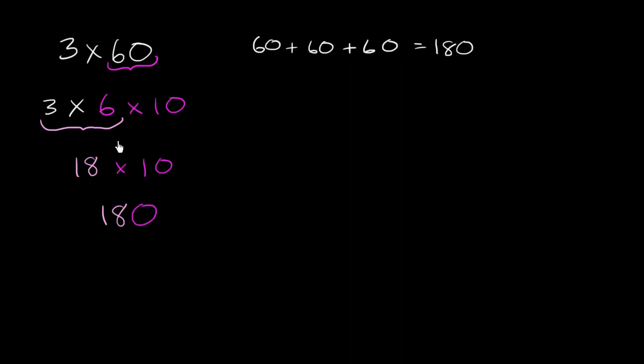Now, the more practice you get here, you'll realize, hey, I could have just said 3 times 6 is 18. But I have to worry about this 0 right over here. So I'm going to put one more 0 at the end. It's going to be 180. Same answer that we got right over there.